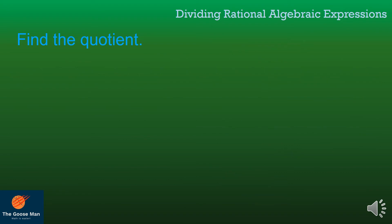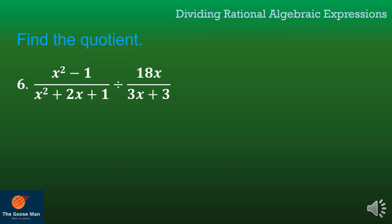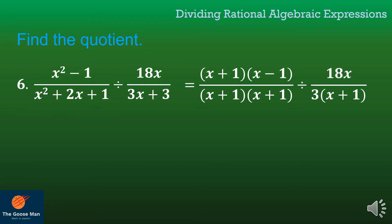Let's move on to the next example — this is a little bit challenging. I have x squared minus 1 over x squared plus 2x plus 1, divided by 18x all over 3x plus 3. Note that x squared minus 1 is in the form of difference of two squares, while x squared plus 2x plus 1 is a perfect square trinomial. To factor the difference of two squares, take the square root of x squared, which is x, and the square root of 1 is 1, putting positive and negative signs.